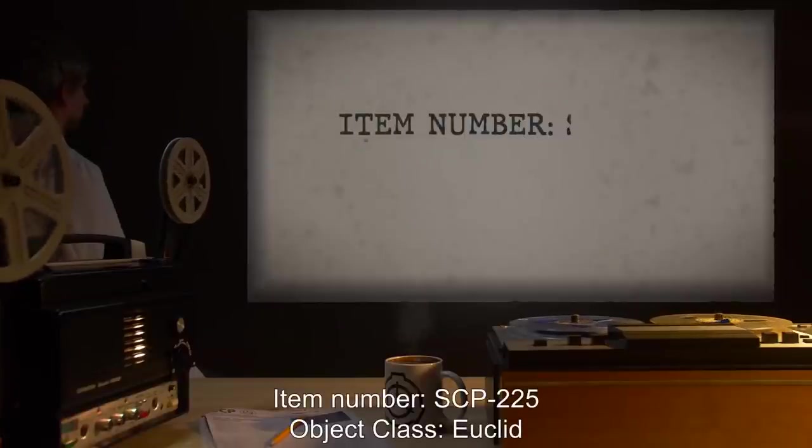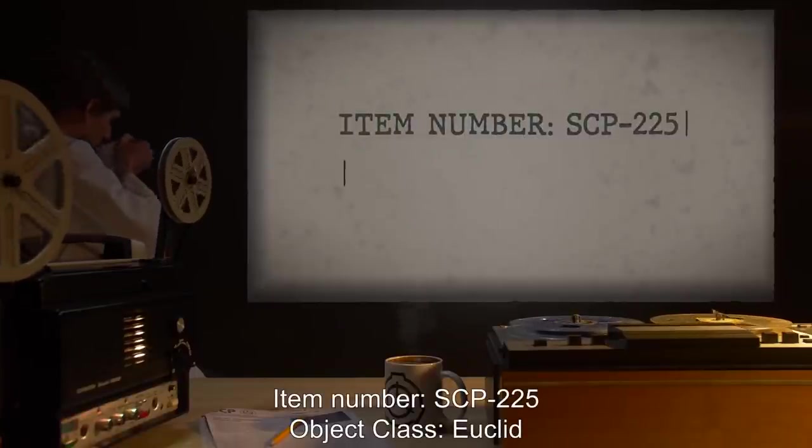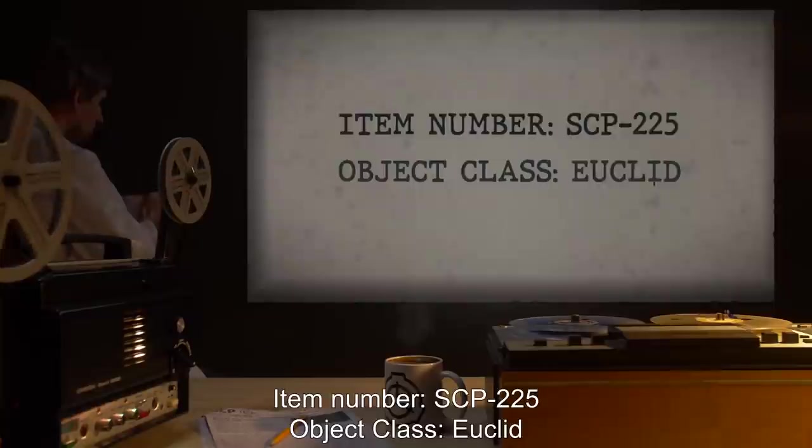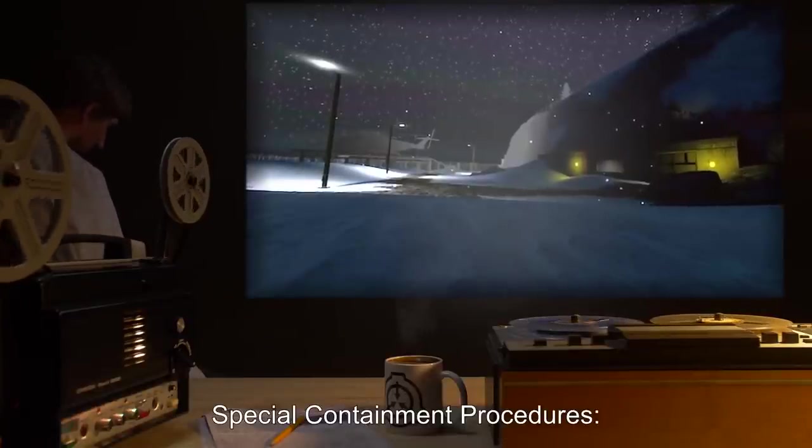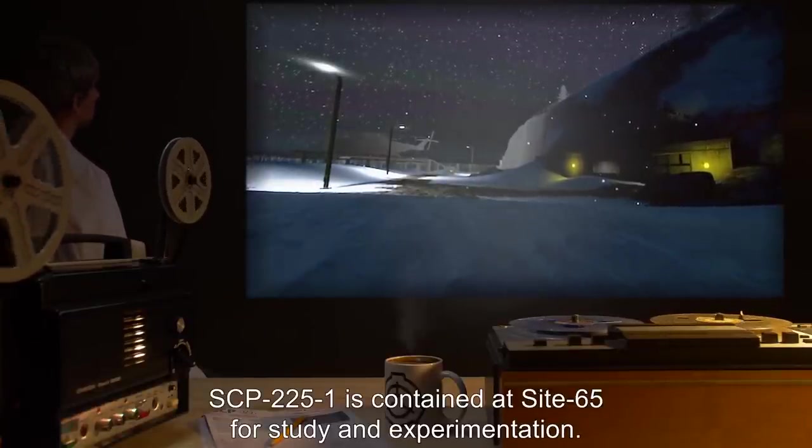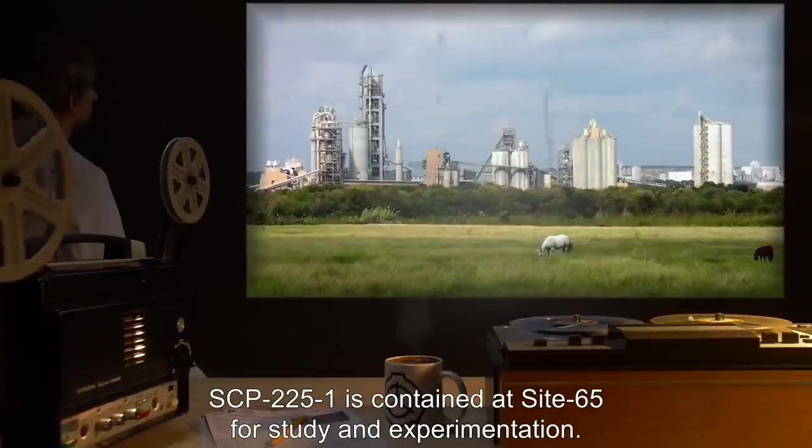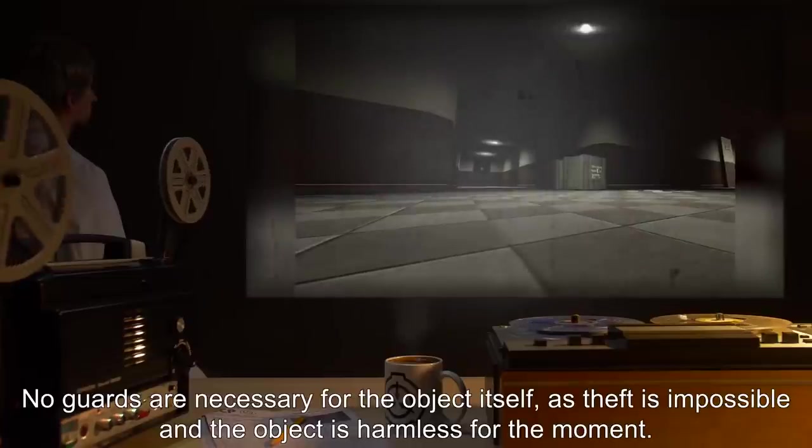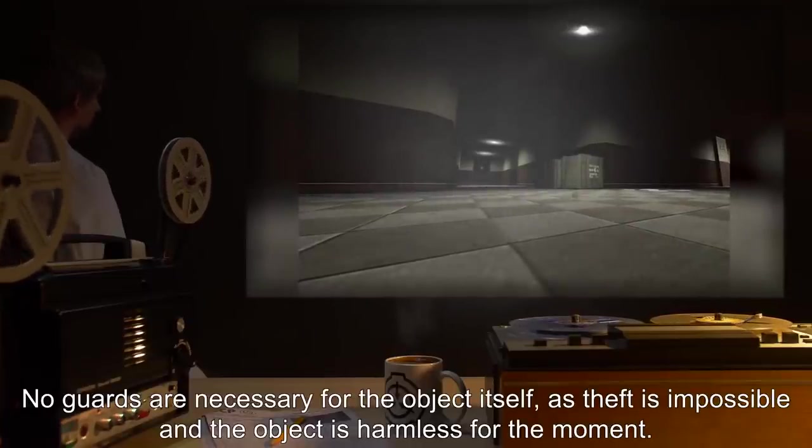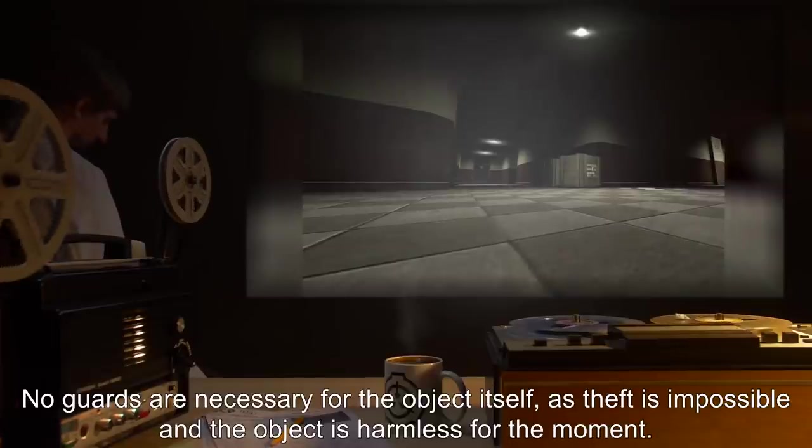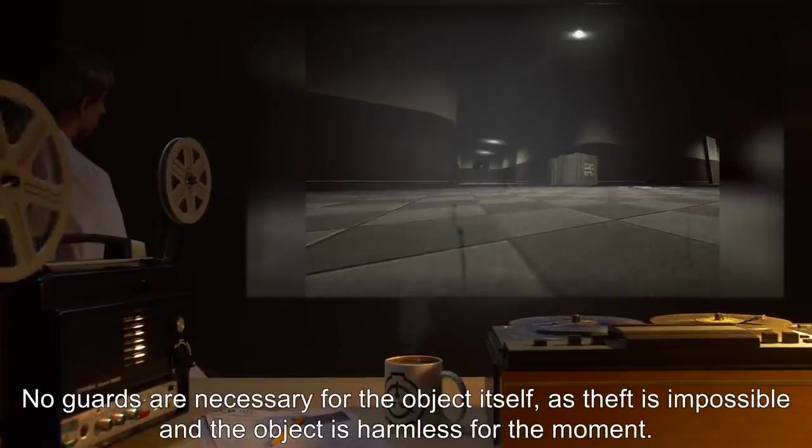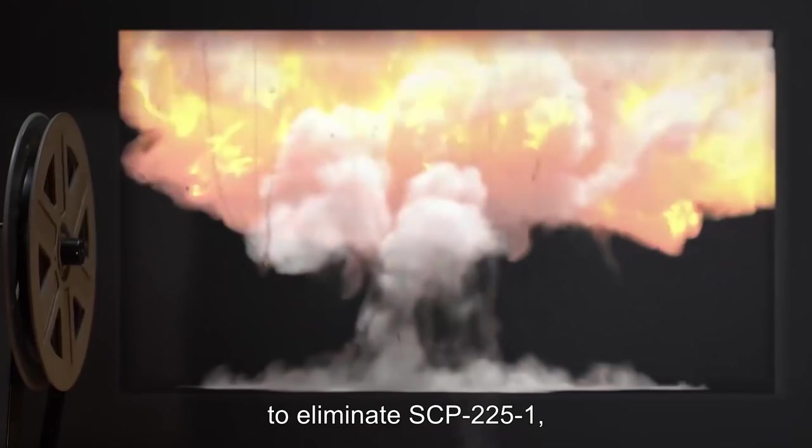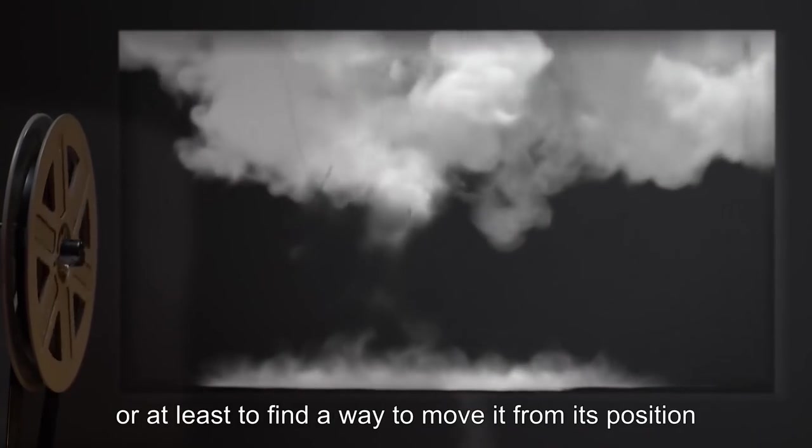Item number SCP-225, Object Class Euclid. Special Containment Procedures: SCP-225-1 is contained at Site 65 for study and experimentation. No guards are necessary for the object itself as theft is impossible and the object is harmless for the moment. Ongoing tests are to be made to find a way to eliminate SCP-225-1 or at least to find a way to move it from its position in a controllable fashion.